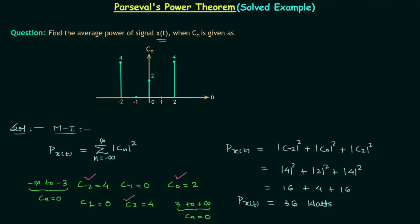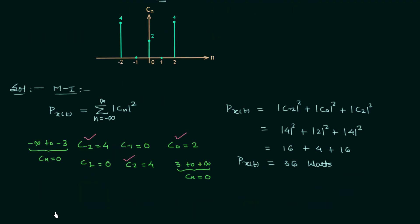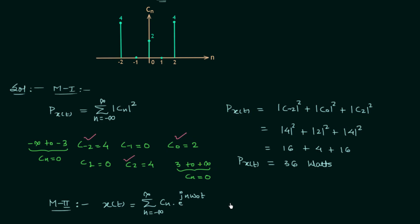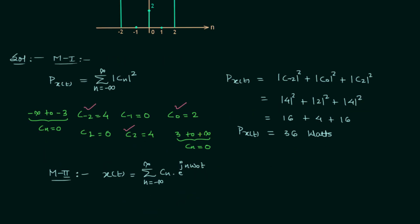Now moving to method number two. In this method we will first write down the complex exponential Fourier series. We know x(t) equals the summation from n = −∞ to ∞ of c_n multiplied by e^{jnω₀t}. In this expansion we will have only three non-zero terms corresponding to c_{-2}, c_0, and c_2.